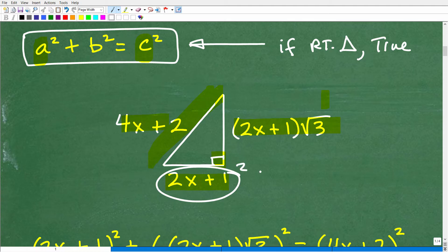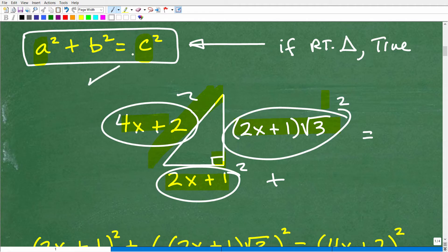And we're going to see if that's going to be equal to this thing squared. If that is the case, then, in fact, this is a right triangle because this relationship only holds true in a right triangle. So let's go ahead and get into this right now.